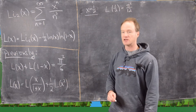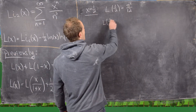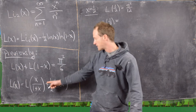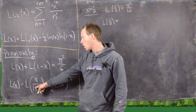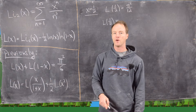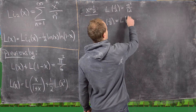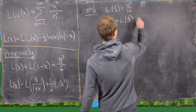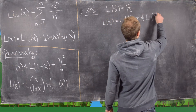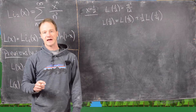Let's see what the other functional equation gives us. That gives us L of one half equals L of one half over 1 plus one half, so that's one half over three halves — in other words, one third — and then plus one half L of one half squared, which is one quarter.